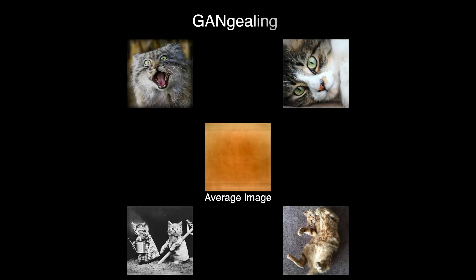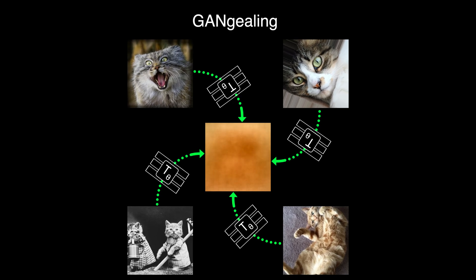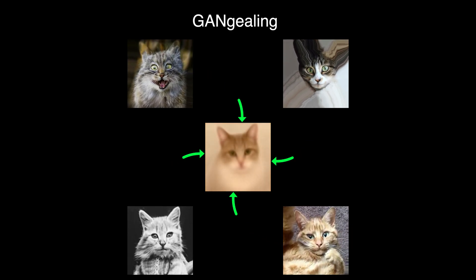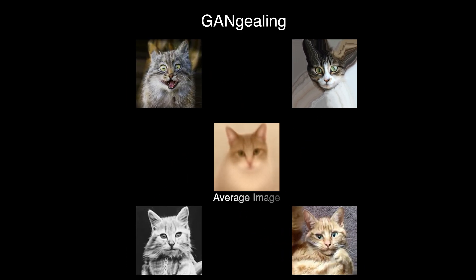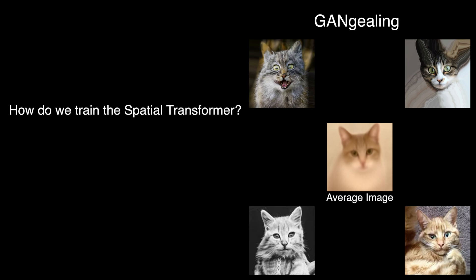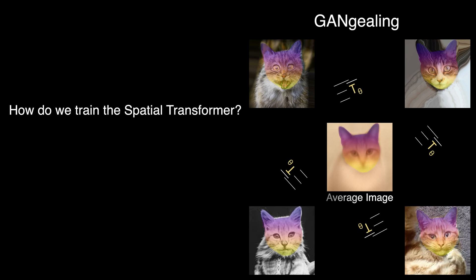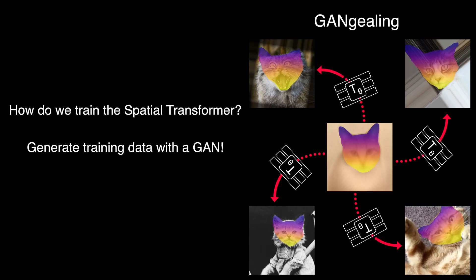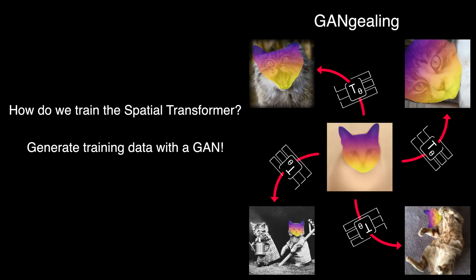In this work, we introduced GANGEALING. Rather than learn per-image affine warps, we train a spatial transformer network that predicts highly expressive transformations of images, and it works for extremely diverse ELSEN-level datasets. The key question is how can we actually train this spatial transformer network, and the key insight of our paper is to use a GAN to generate the training data.